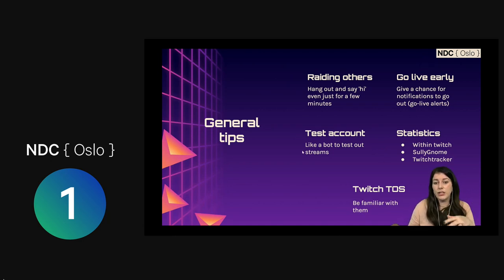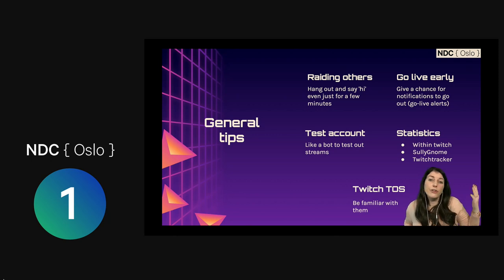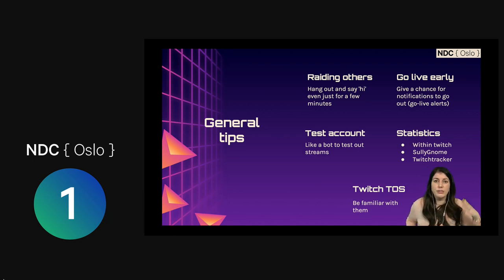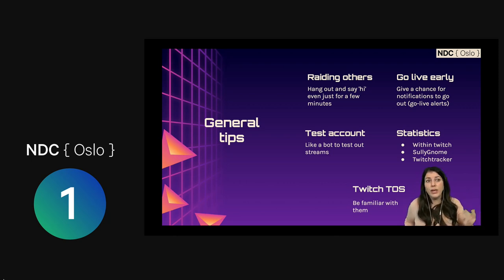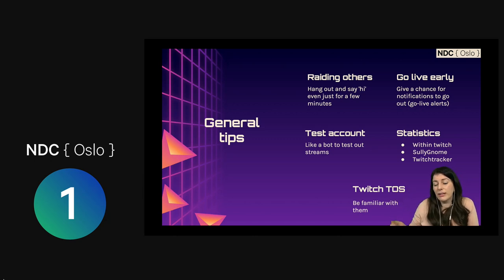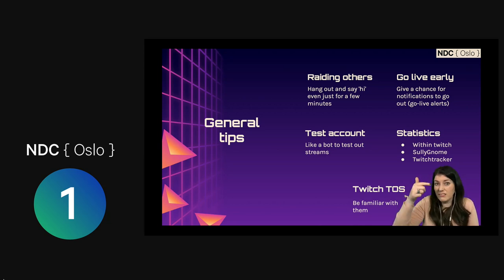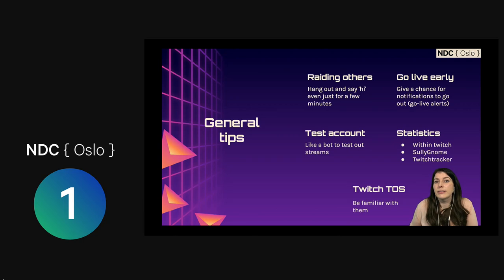General tips. Remember raiding — at the end, if you want to raid someone, go and raid them, hang around for like five minutes, ask them what they're doing, chat to them. Same goes if someone raids you — wait for a few moments because you get pre-roll adverts so they may not come directly into your stream. Go live early because the go-live notifications that tell your followers you're live take a little while to go out — go live about 15 minutes early. You can get a countdown widget from StreamElements. Also get a test account so you can broadcast in secret and no one sees what you're doing while you experiment.